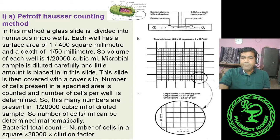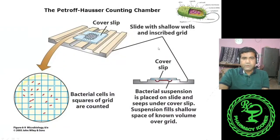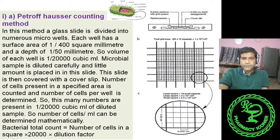The depth of the well is 1/50 millimeter. So the volume of each well is 1/20,000 cubic millimeter.